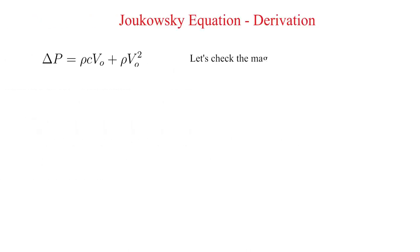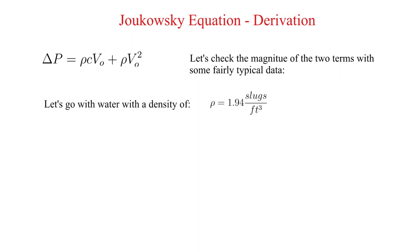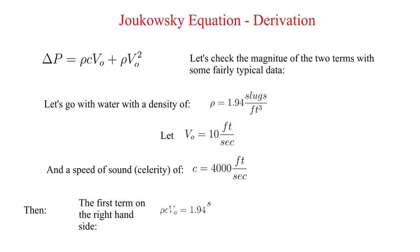Let's check the magnitude of the two terms with some fairly typical data. We will go with water with a density of 1.94 slugs per cubic feet. Let V0 be equal to 10 feet per second. Let the speed of sound or celerity be equal to 4,000 feet per second. Let's calculate the first term on the right hand side. We get 77,600 slugs per feet second squared. And those units are probably not what comes to mind when we think of pressure.